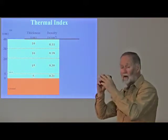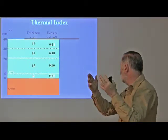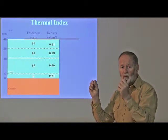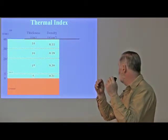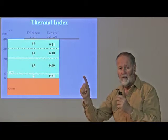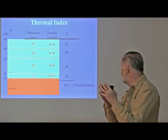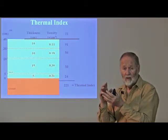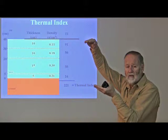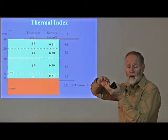We sample all four layers and get densities varying from light fluffy snow at the top at 0.11 grams per cubic centimeter, or 11% water, up to the second layer from the bottom at 0.30 grams per cubic centimeter, or 30% water. To calculate the Thermal Index, we take the thickness and divide it by the density. That top layer, light and fluffy, has a Thermal Index of 91, whereas the thickest layer, because it's so dense, has a Thermal Index of only 50. Summing the values for the whole snowpack gives a total Thermal Index of 221.